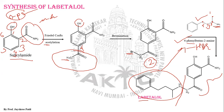In short, it's a very simple synthesis involving Friedel-Crafts acetylation of salicylamide, followed by bromination, which on treatment with 4-phenylbutan-2-amine produces labetalol. Thank you.